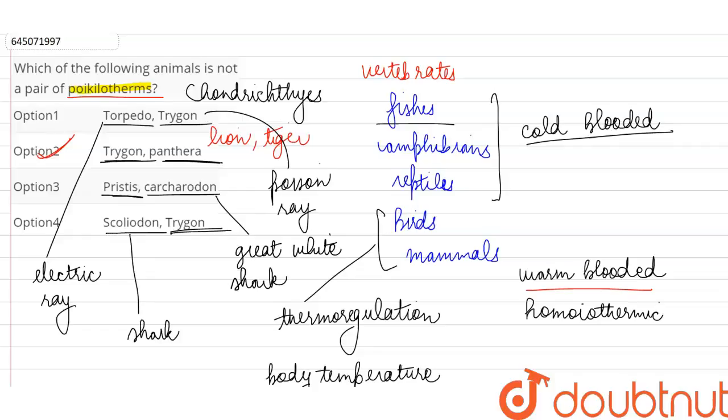Then again they've given Scoliodon and Trygon. So Trygon we've already discussed, and Scoliodon is a name given to the shark which is also commonly called the dogfish.